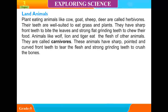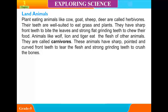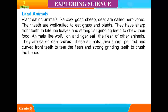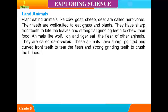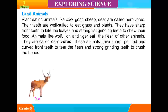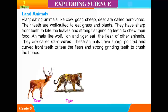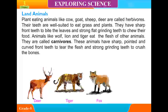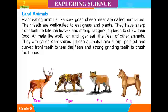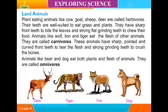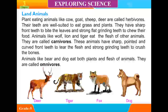Animals like wolves, lions, and tigers eat the flesh of other animals. They are called carnivores. These animals have sharp, pointed, and curved front teeth to tear the flesh and strong grinding teeth to crush the bones.